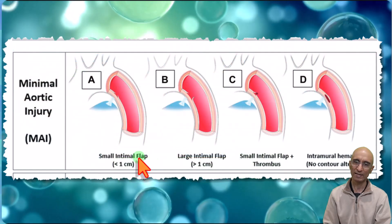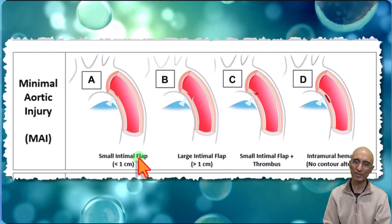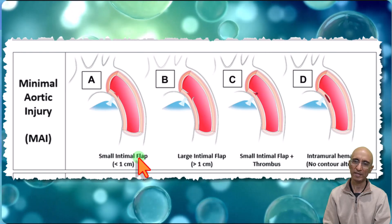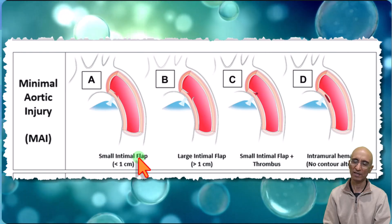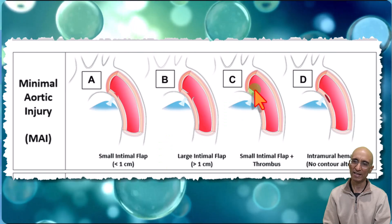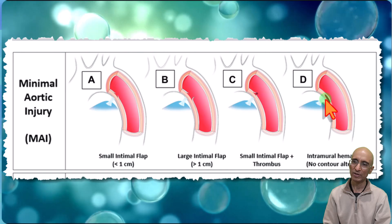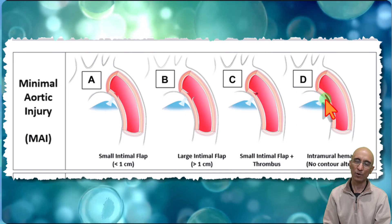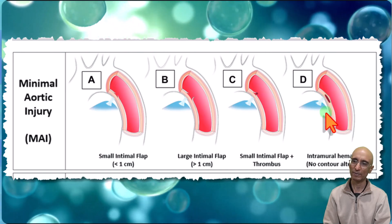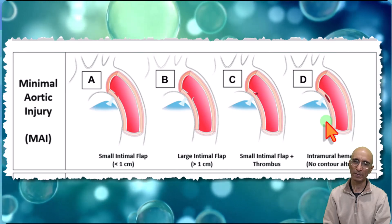Minimal aortic injury is characterized by a small intimal flap which can be less than one centimeter or more than one centimeter, but without external contour abnormality. There can be a small thrombus attached to the intimal flap. SVS grade 2 injury, which still falls under the MAI spectrum, can have a small intramural hematoma but without contour abnormality.